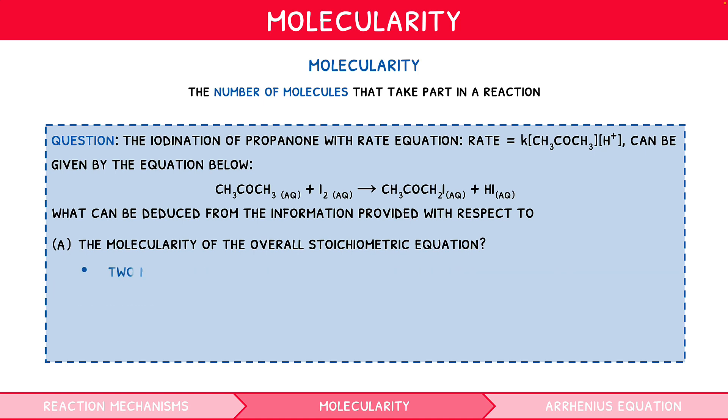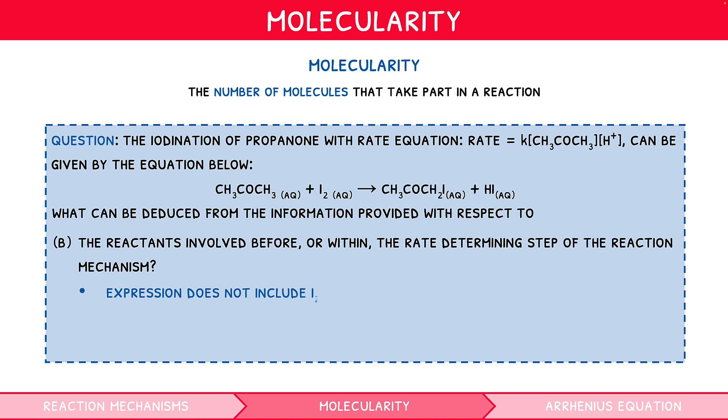For A, two molecules of reactants are involved in the stoichiometric equation, so the molecularity is 2. For B, the rate expression does not include I2, so it can be concluded that I2 is involved after the rate-determining step. Meanwhile, H+, must be included before, or in, the rate-determining step.